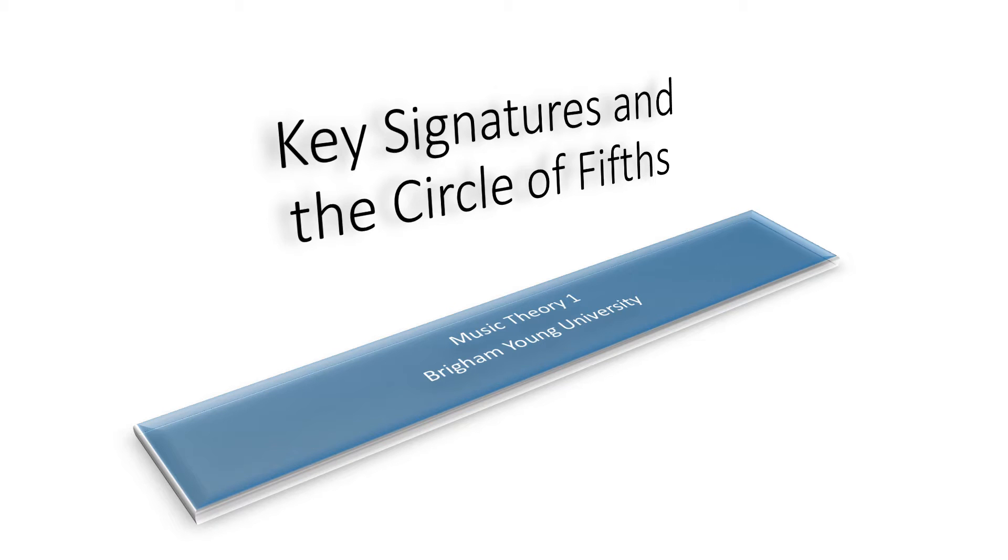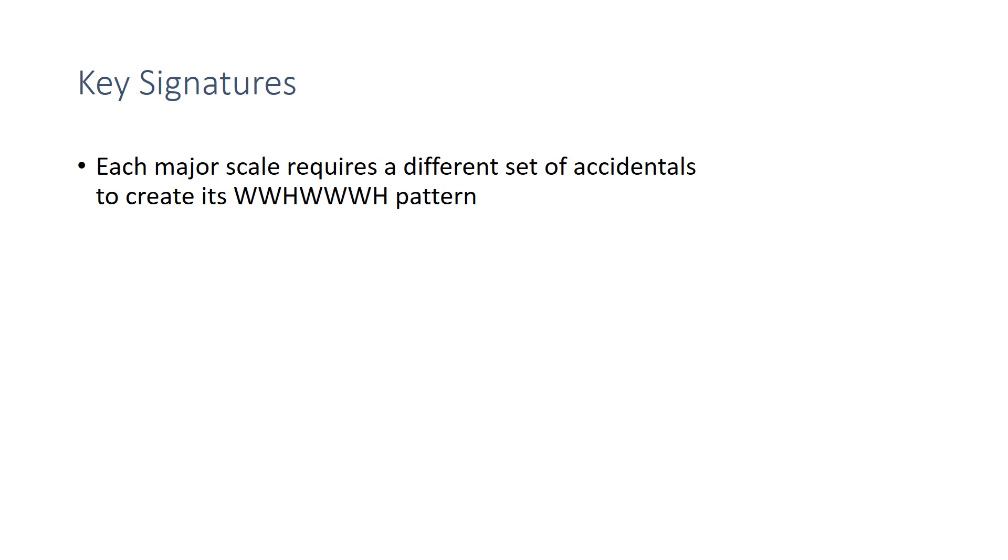Hello, and welcome to this lesson on key signatures and the circle of fifths. In the lesson on major scales, we learned that each major scale requires a different set of accidentals in order to create a whole-whole-half, whole-whole-whole-half pattern.